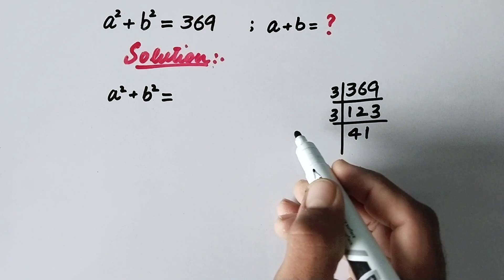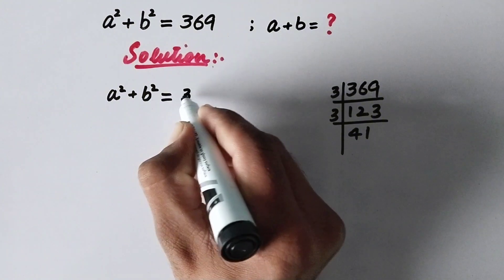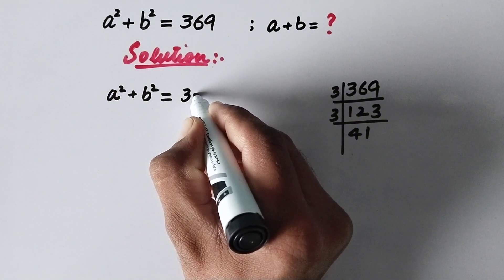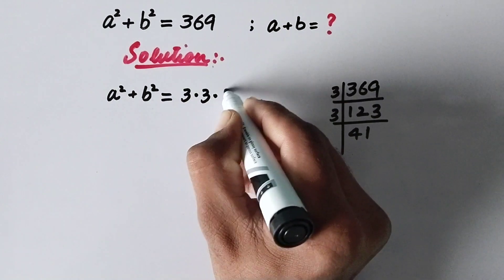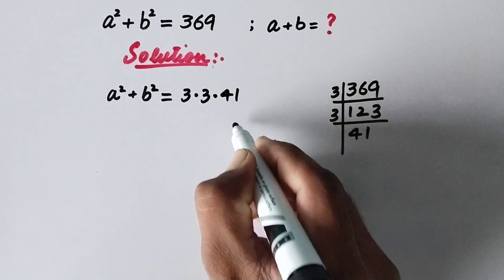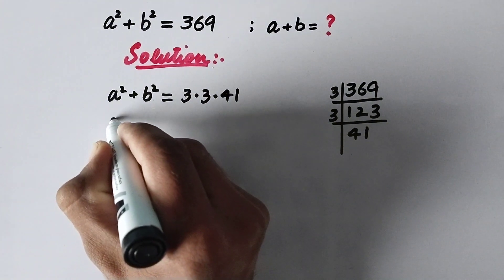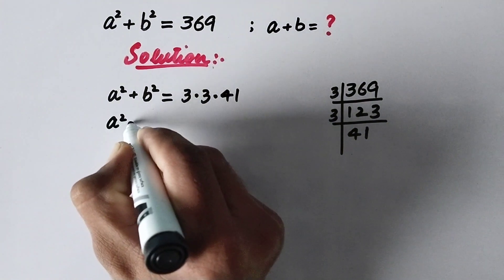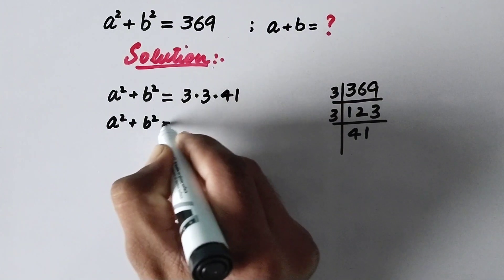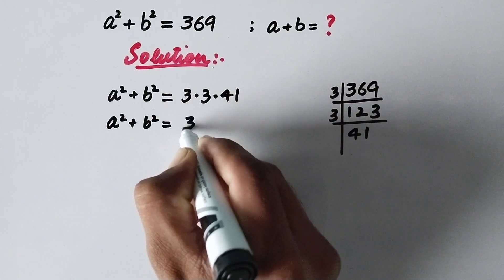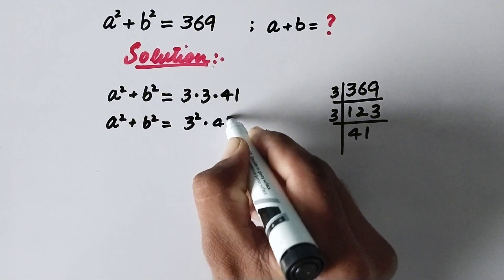And these are the prime factors. So here we can write a squared plus b squared is equal to 3 times 3 times 41, or in the next step, a squared plus b squared is equal to 3 squared times 41.